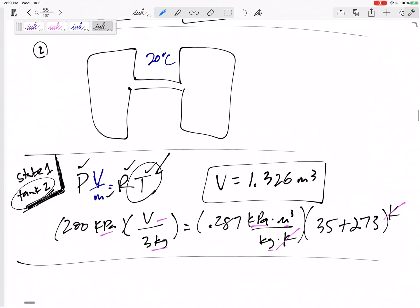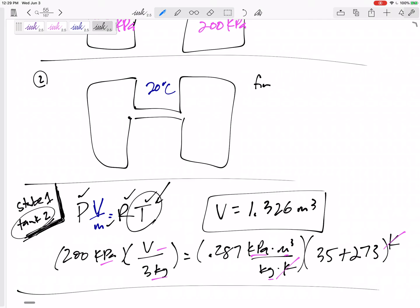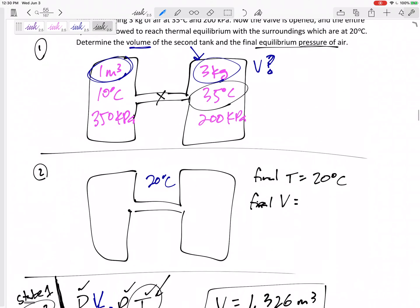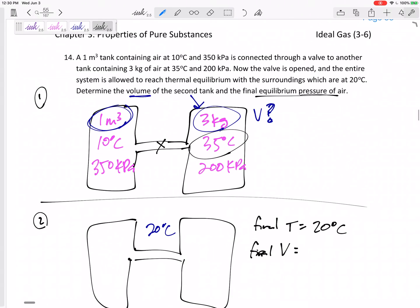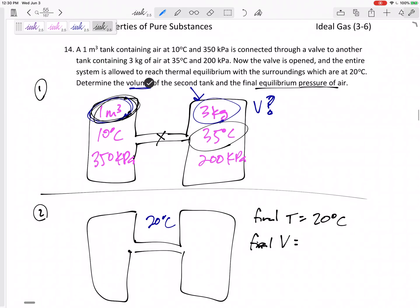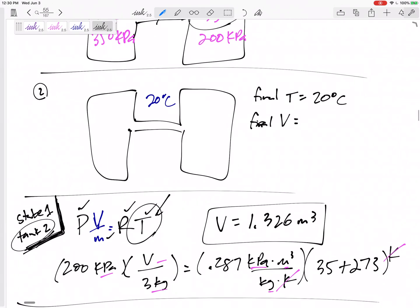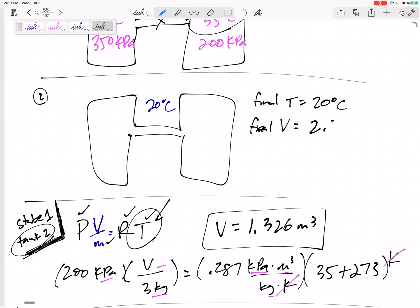All right, so now that we calculated the volume, state two, the final temperature is 20°C. The final volume, it fills up both of these tanks. These tanks aren't changing. It doesn't say anything about the volume changing. So the volume is now they're together, right? The volume is now going to be 1 from tank one and 1.326 from tank two. So the total volume, 2.326 m³.